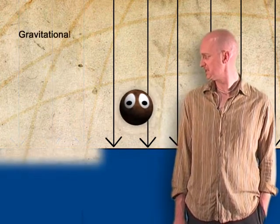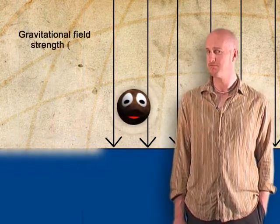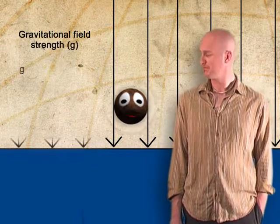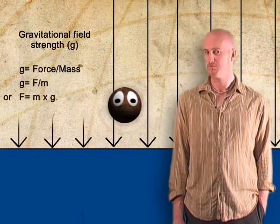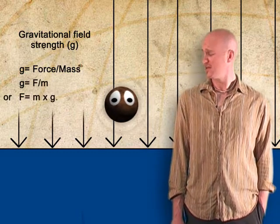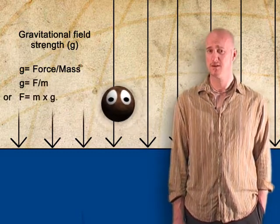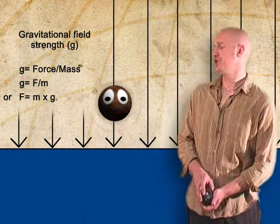Alright. So a gravitational field strength in a uniform field is found by g equals force divided by mass. That's great Mike. Thanks. No problem Stephen. Could you give me a lift out of here? Sure. No problem.